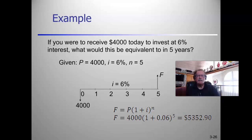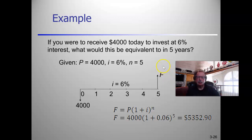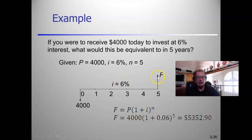If we want to receive $4,000 today and the interest rate is 6%, what would that be equivalent to in five years? Draw a cash flow diagram: $4,000 today, five periods, i equals 6% per period, and solve for F. Plugging into the formula gives F equals $5,352.90.